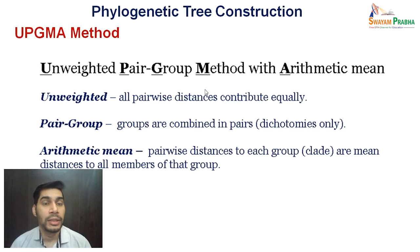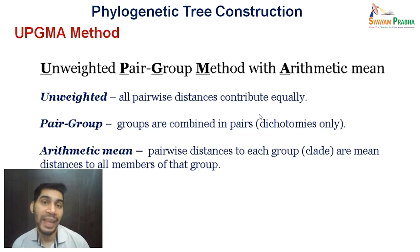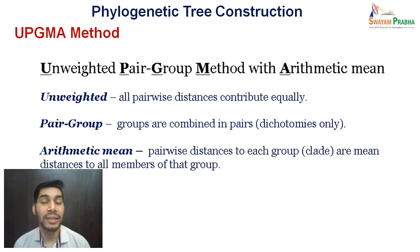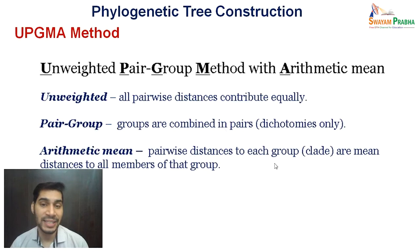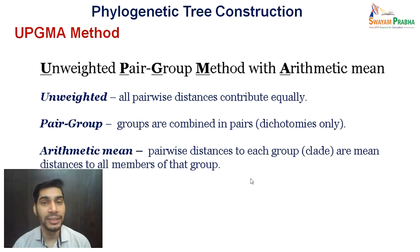UPGMA is Unweighted Pair Group Method with Arithmetic Mean. Unweighted because all pairwise distances contribute equally — the A and B taxons, for example, which are originating from a common ancestor or node, are equidistant. Pair group means groups are combined in pairs or dichotomies. Arithmetic mean because pairwise distances to each group are mean distances to all members of that group.